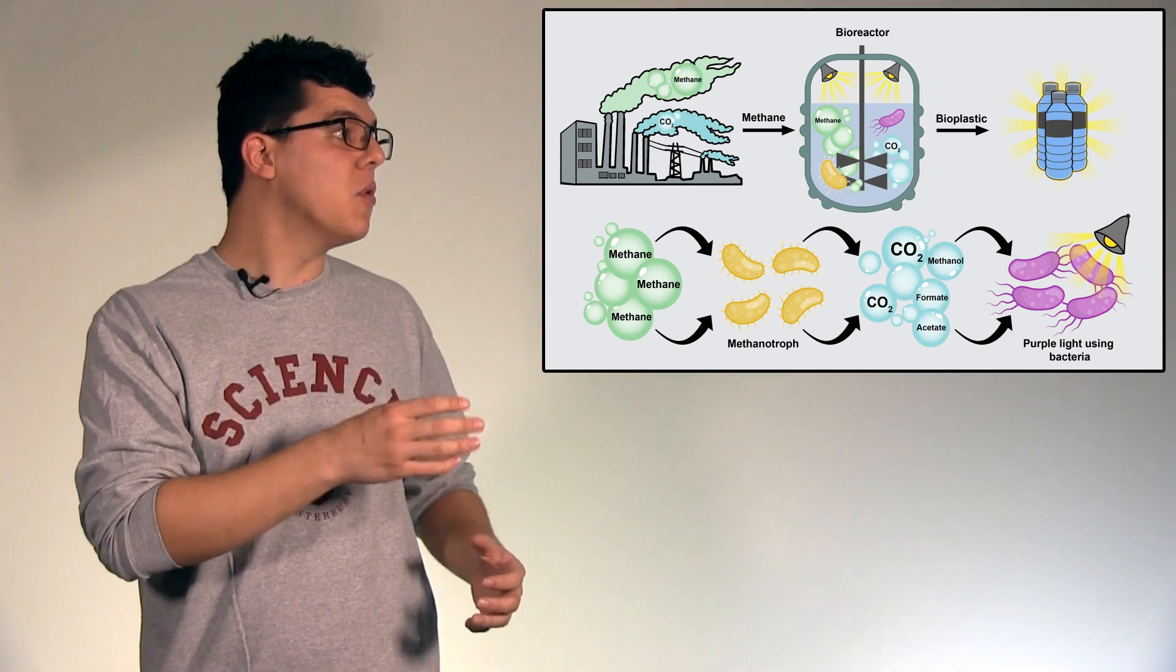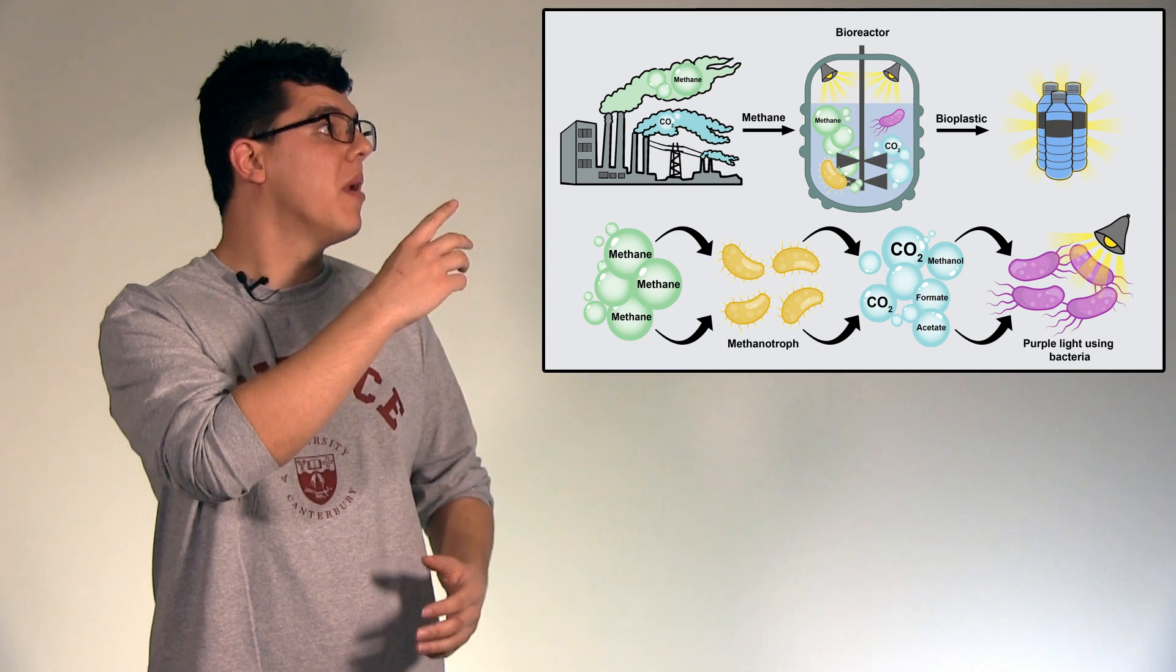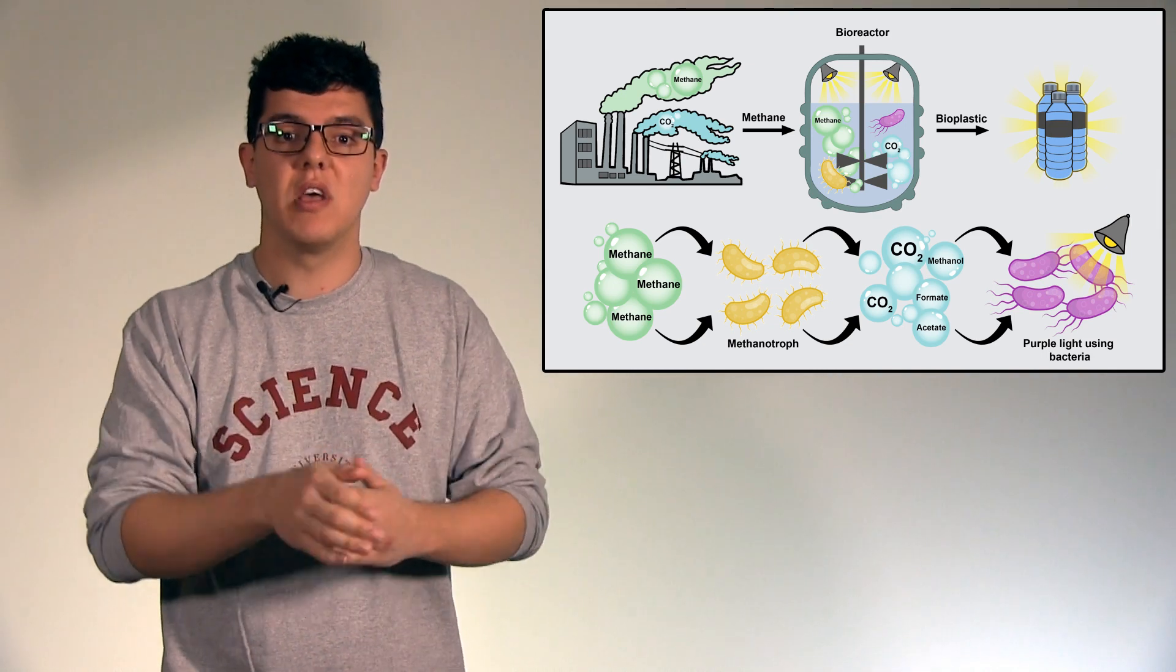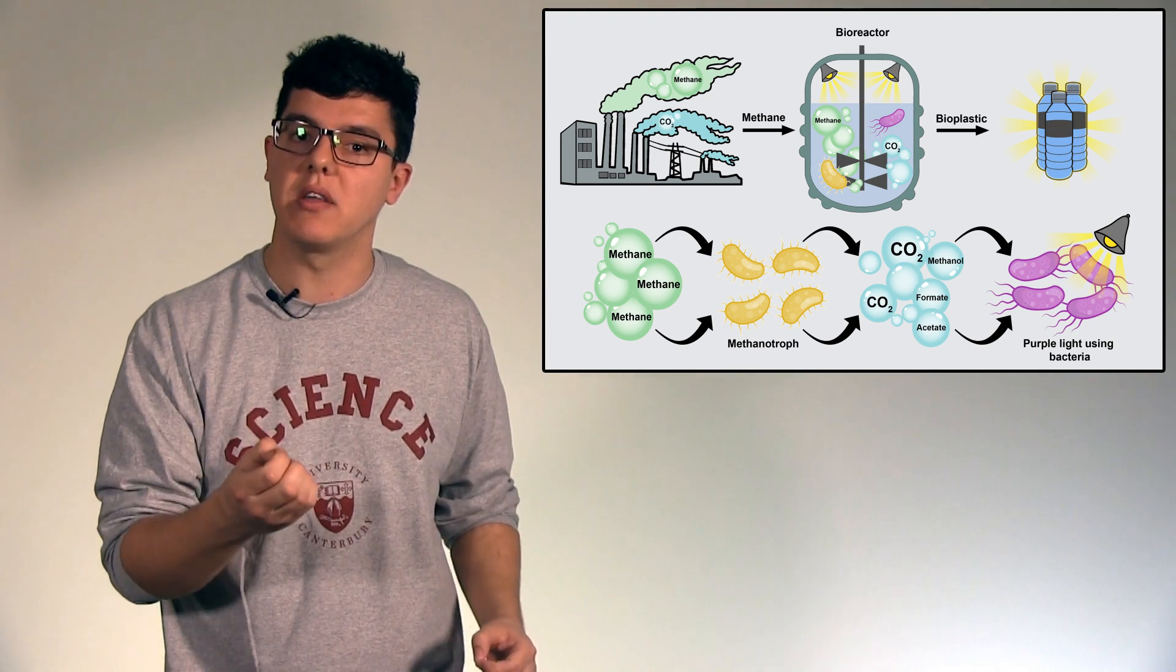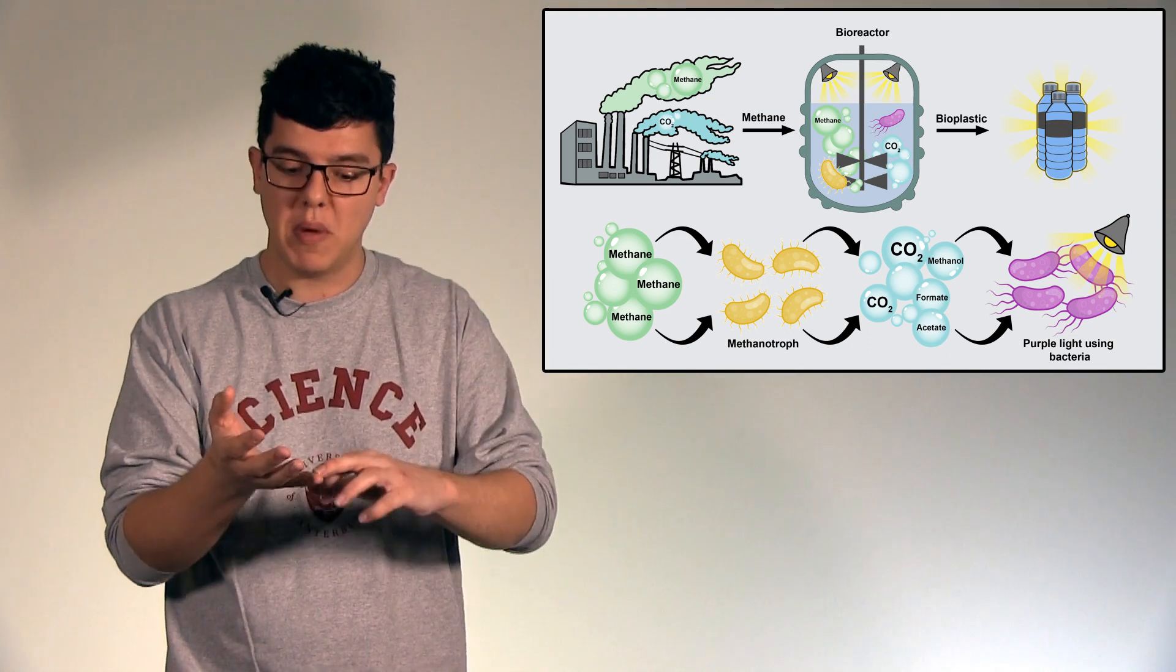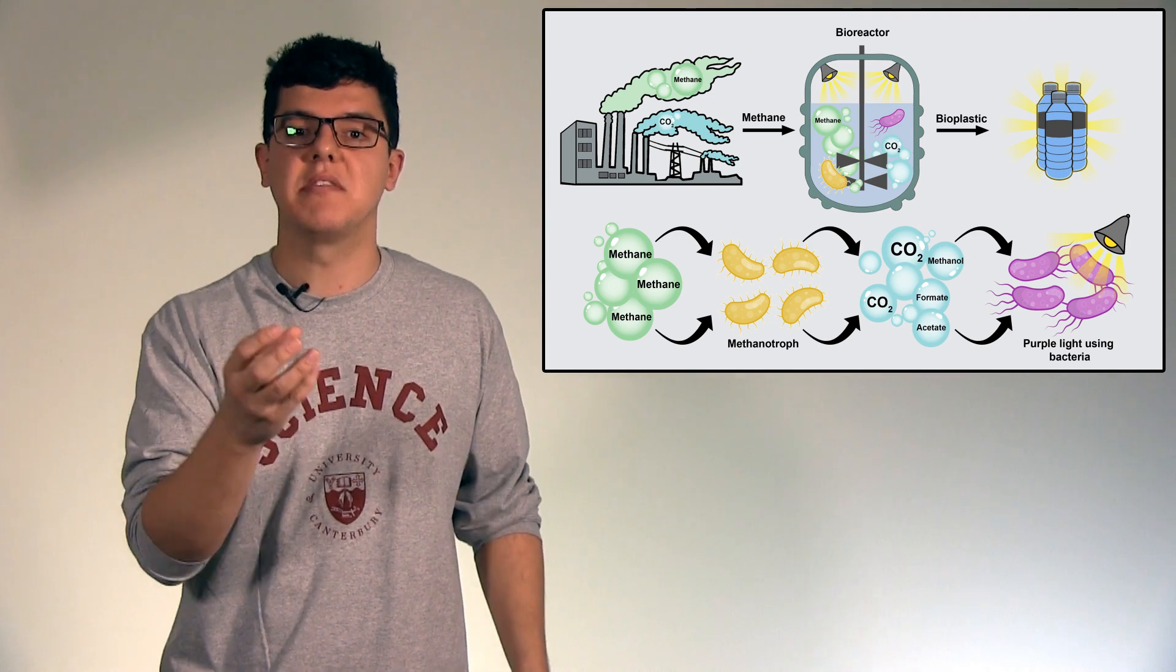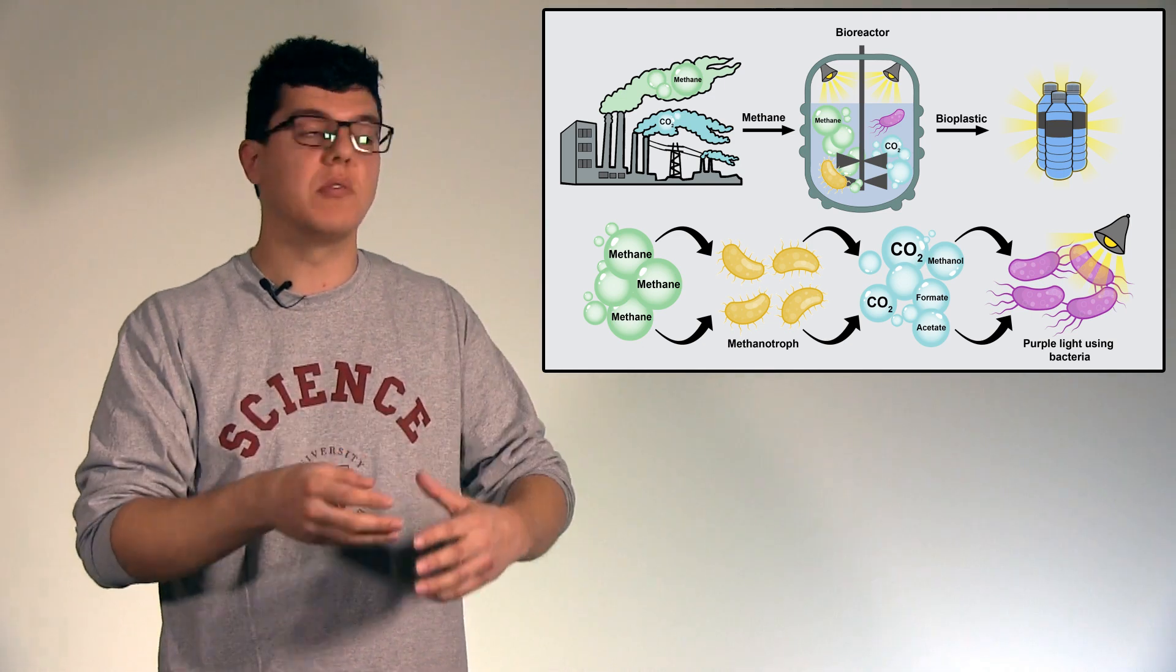So coming full circle here, on the slide at the top we have methane being released, a potent greenhouse gas. We filter this into a bioreactor, which is essentially a tank with bacteria and liquid. Our methanotroph friend lives here and eats the methane and releases those blue bubbles.